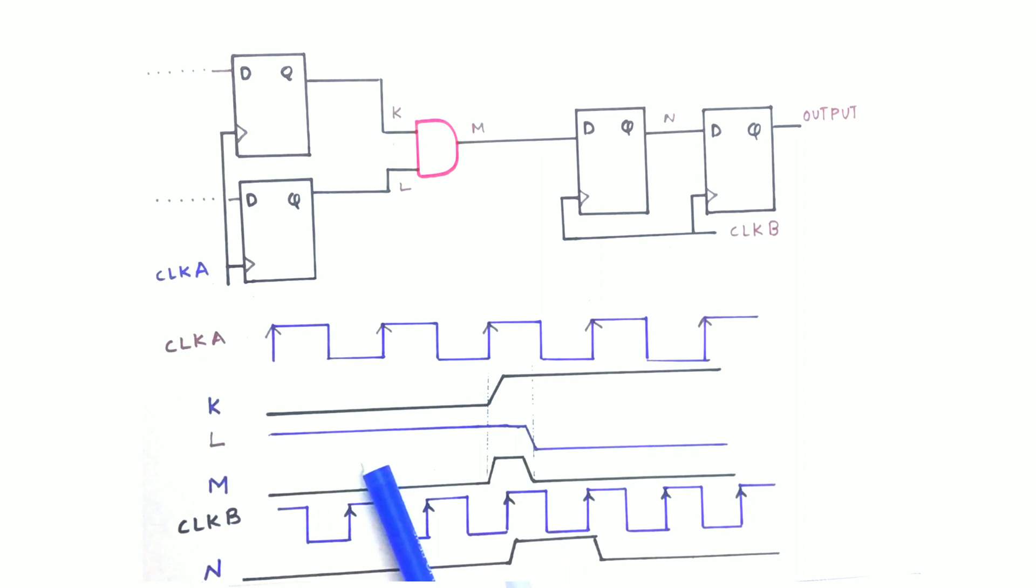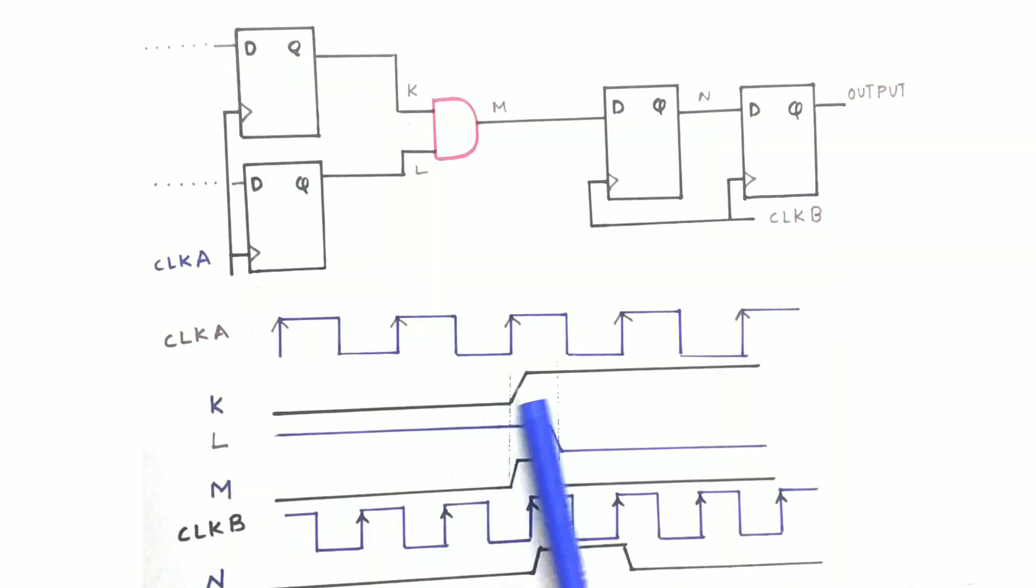So K and L are exactly opposite to each other. So K is low at first and getting high after short period of time and L is high at first and then getting low. Since they both are ANDed we will get M, that is M is low at first and it is high for very short duration and going low again.